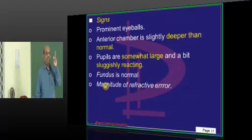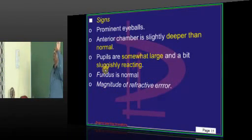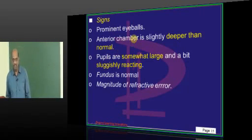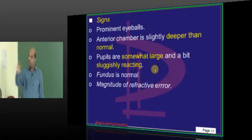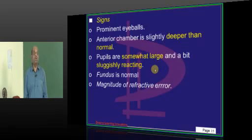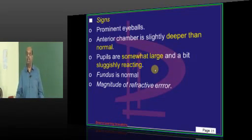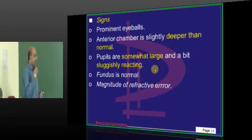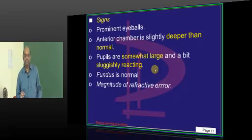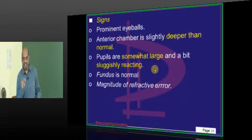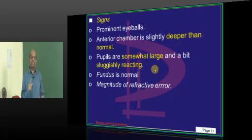The anterior chamber will be more deep than normal. Pupils are somewhat larger and sluggishly reacting. A favourite MCQ: how is the fundus in simple myopia? Fundus is normal. If the fundus is abnormal — if you find crescents, posterior Fuchs spots, or lacquer spots — then it is pathological myopia. Fundus is normal in simple myopia.